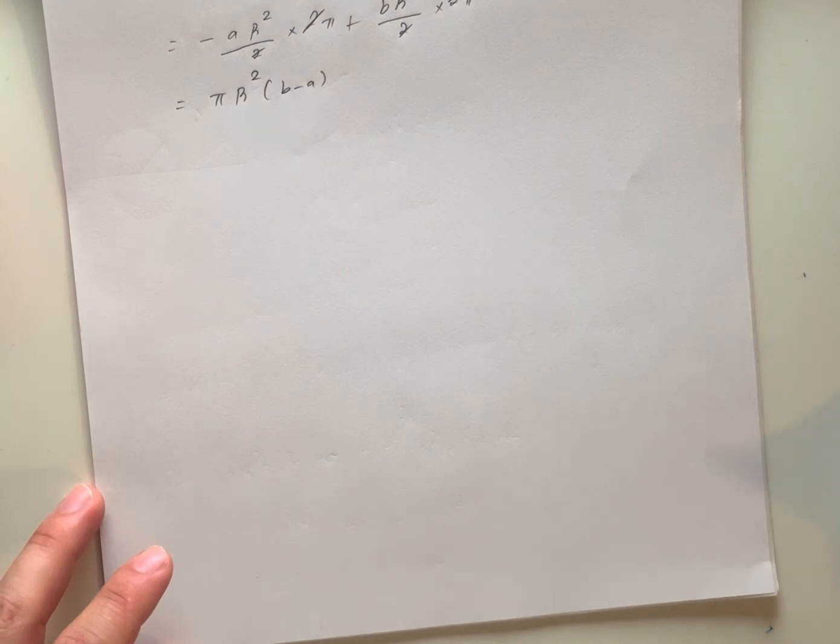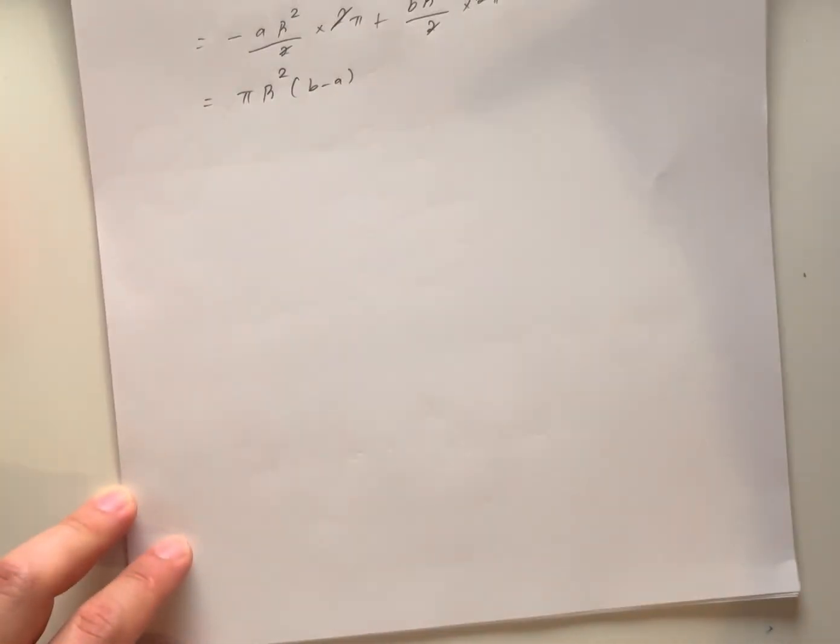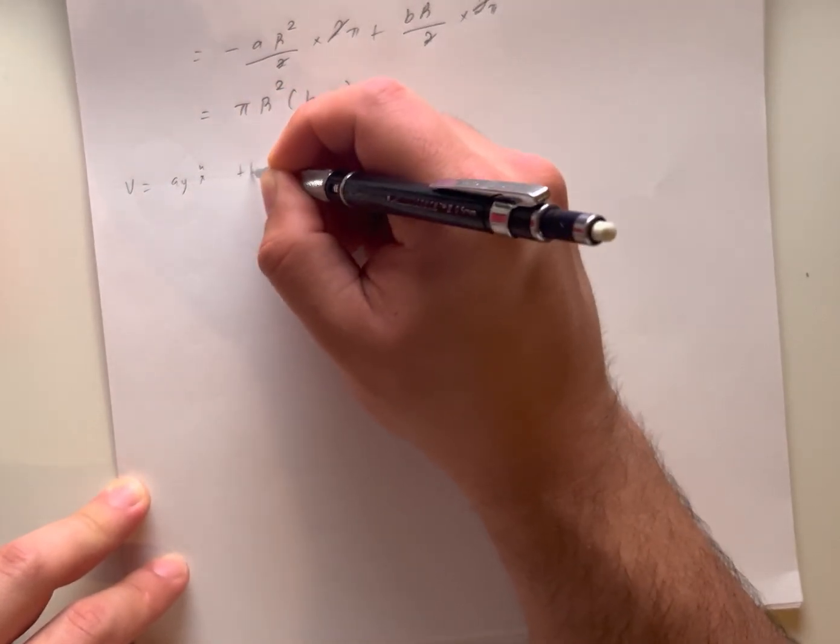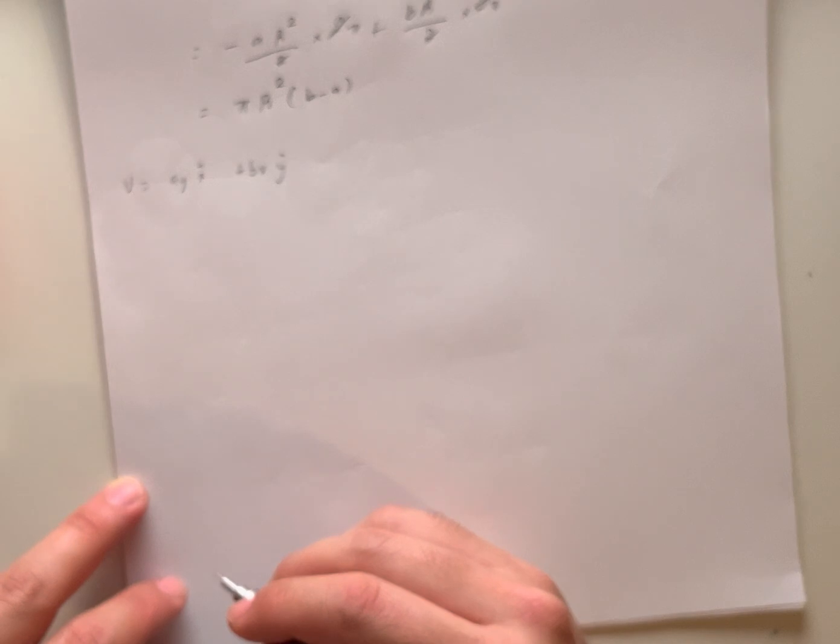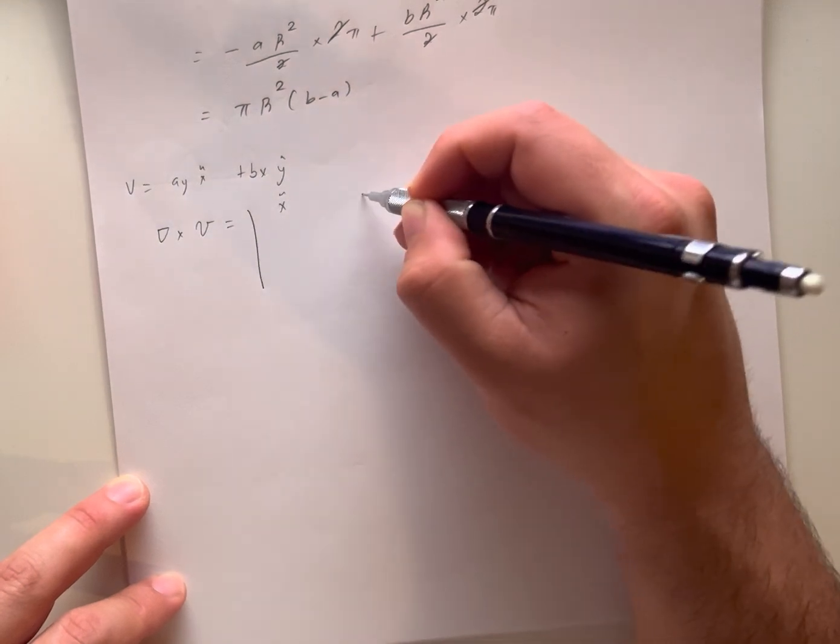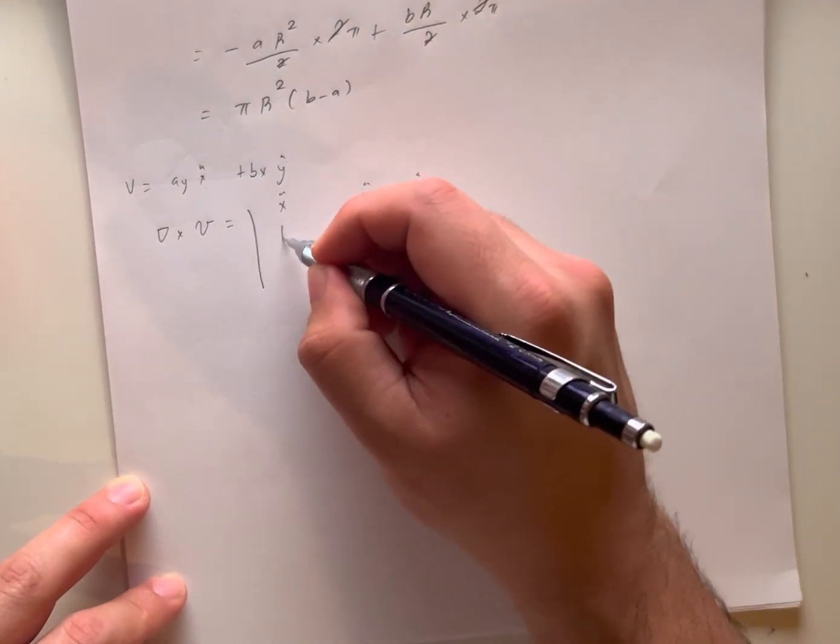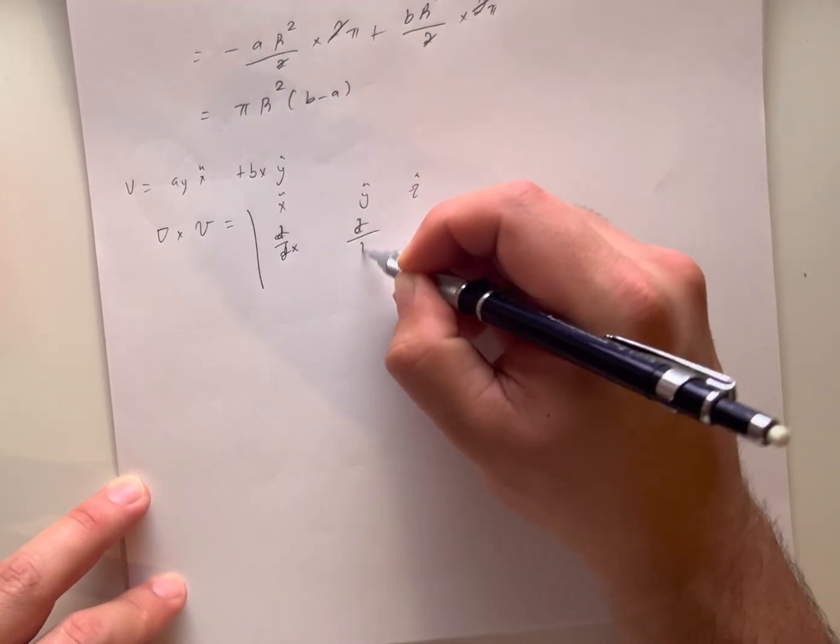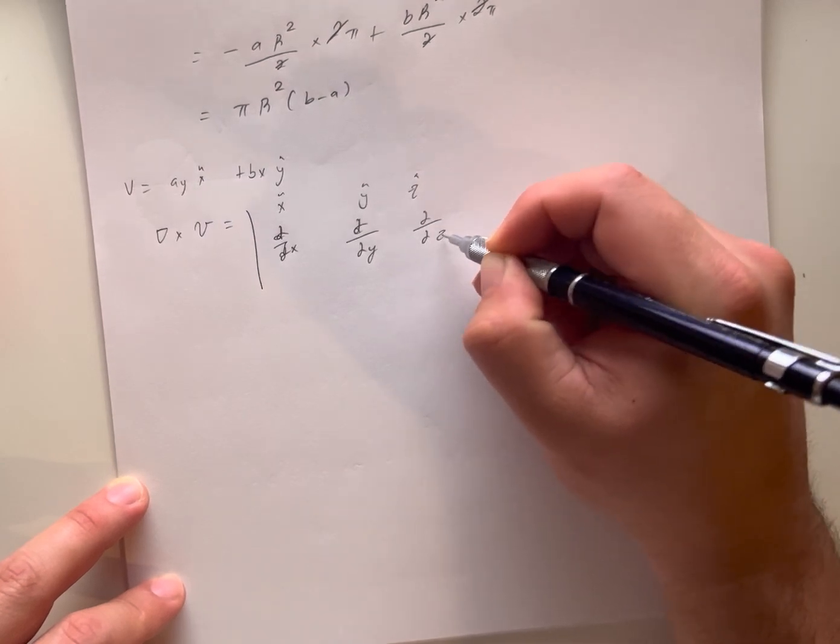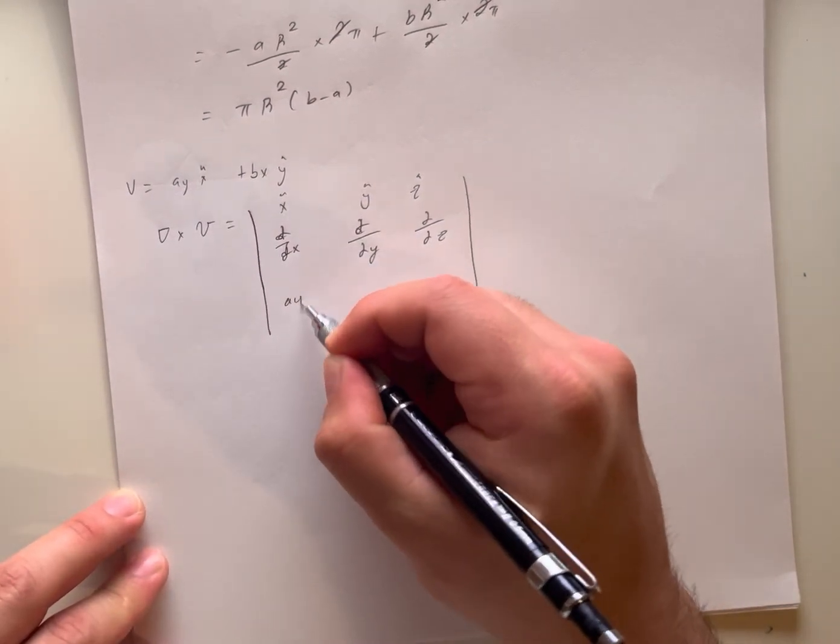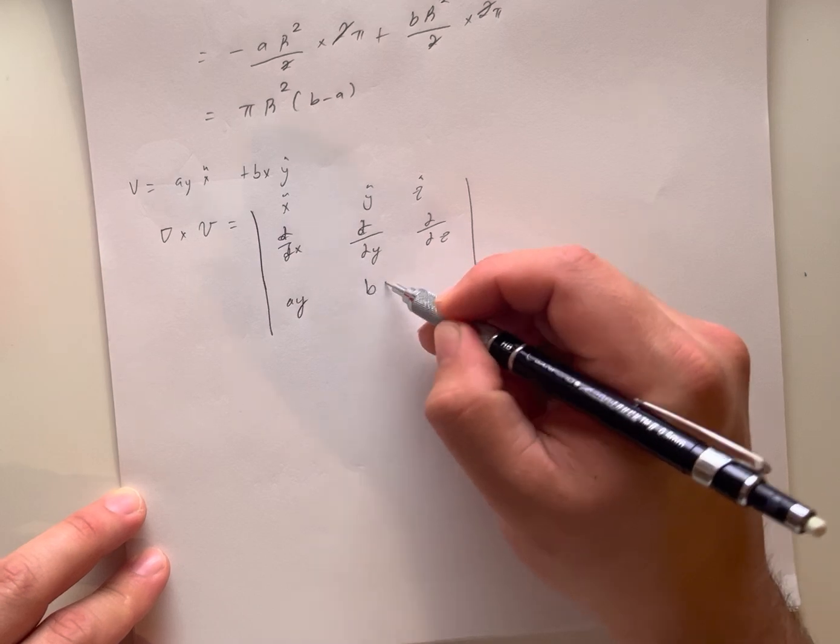Now for doing the curl of v dotted with the area, we just get our function a*y*x-hat plus b*x*y-hat and take the curl of it, where the formula for curl is given as: x-hat, y-hat, z-hat, partial derivative with respect to x, partial derivative with respect to y, partial derivative with respect to z. So we can see for x we have a*y, for y-hat we have b*x, and there's no z component.